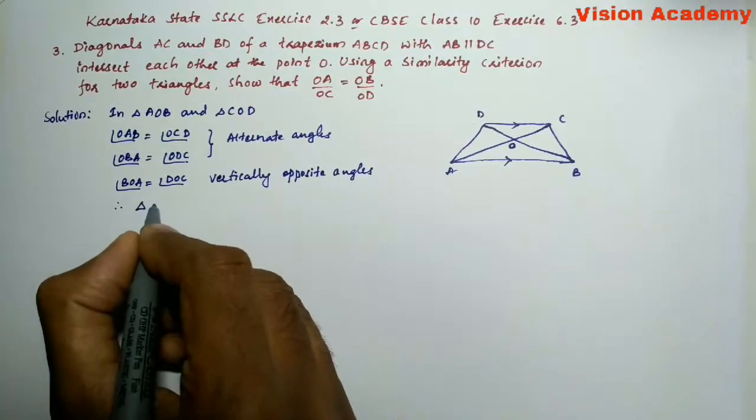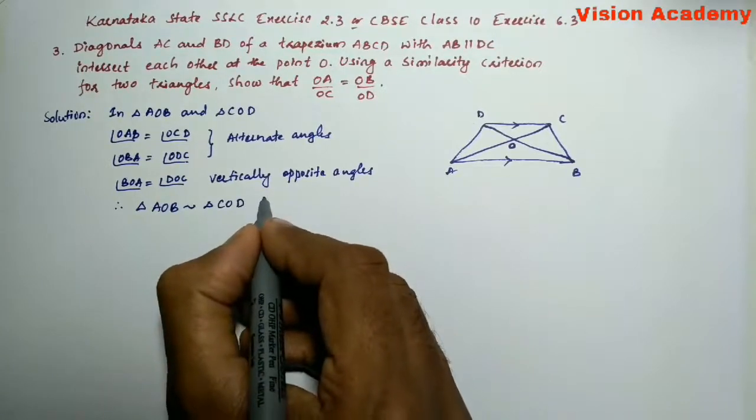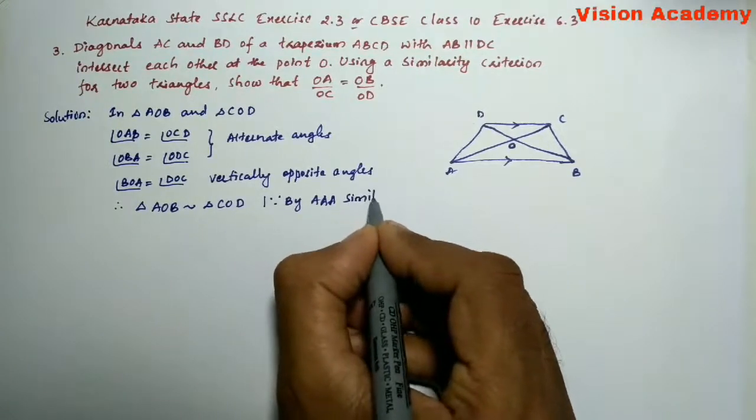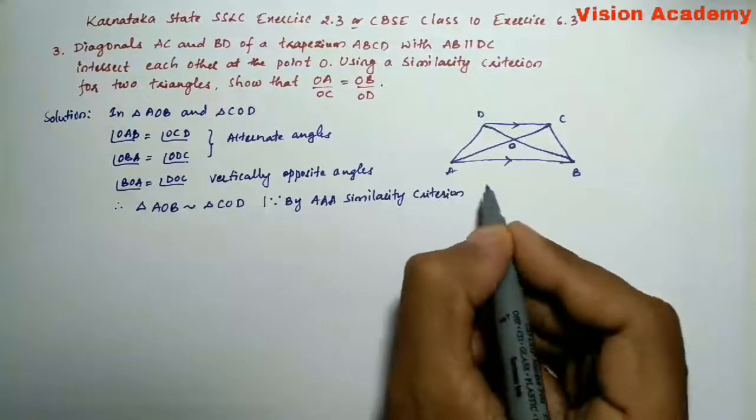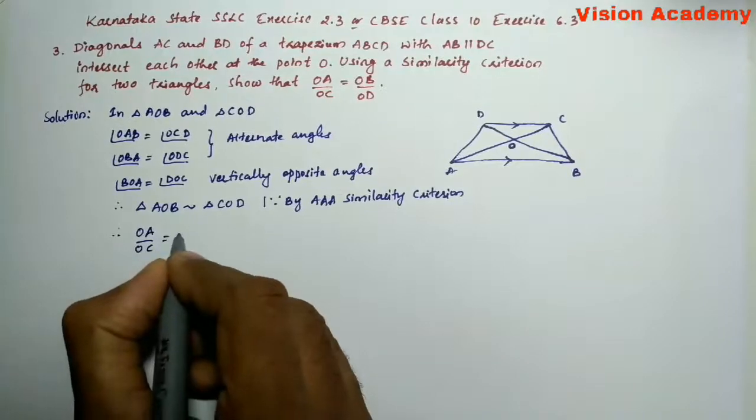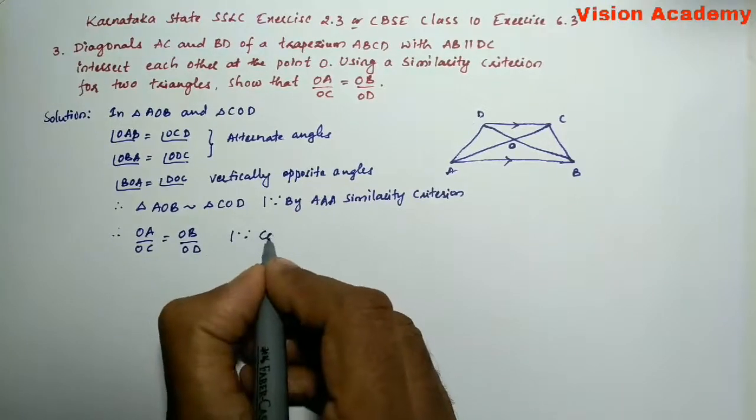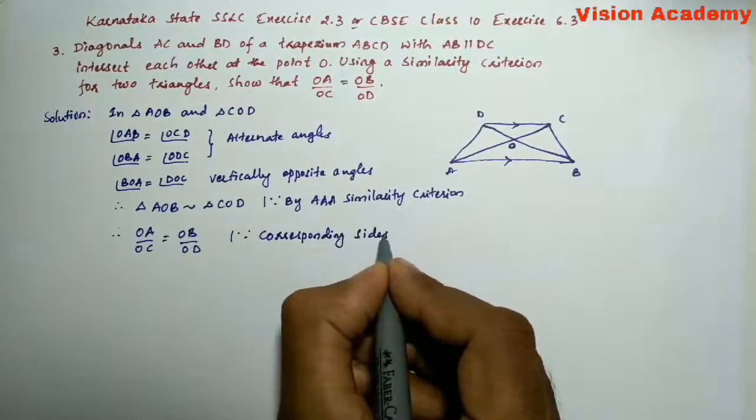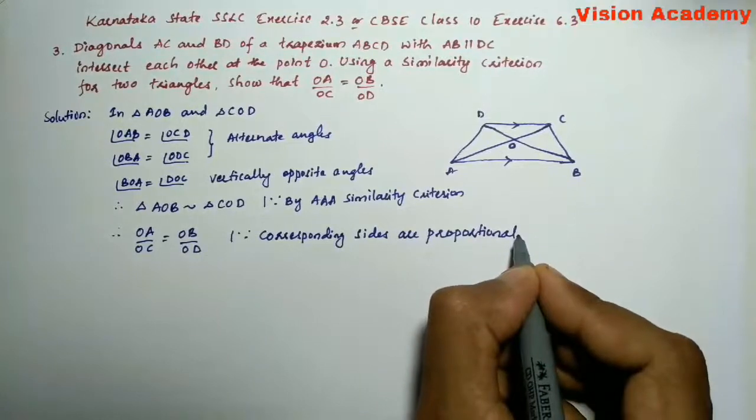Therefore, triangle AOB is similar to triangle COD by angle-angle similarity criterion. Hence, OA by OC is equal to OB by OD, because corresponding sides are proportional. Hence the proof.